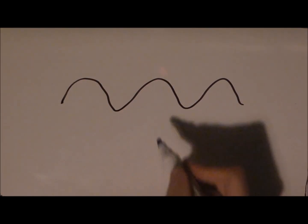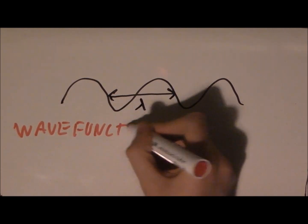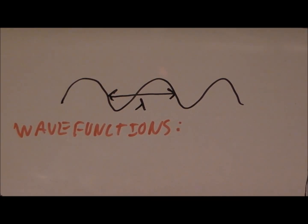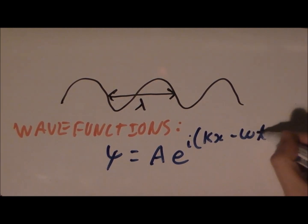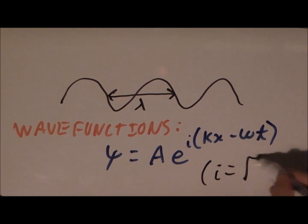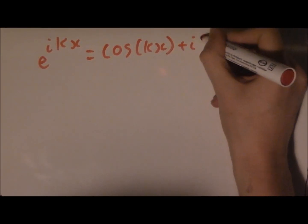We use wave functions to encode information about waves. These are just equations, which have a few special properties. Generally, we call our wave functions ψ, and they look like this. This may look a bit scary, but bear with me. This e to the i thing is actually just a different way to write sines and cosines. And waves are just combinations of sines and cosines.